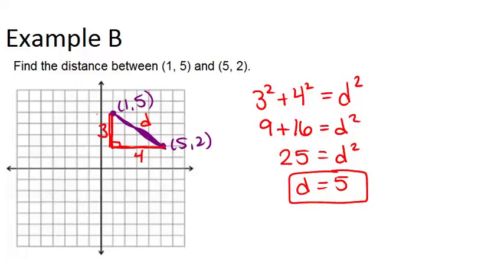Remember also that 3, 4, 5 is a Pythagorean triple. And if you remember that, it will save you some time from having to go through all of that work. So the distance between those two points is 5.